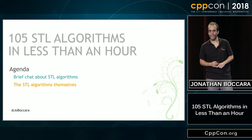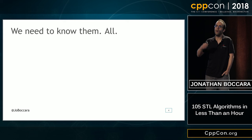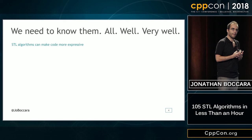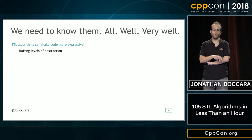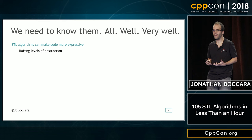There's this thing that's been popularized across the C++ community over the past few years: we need to know all the STL algorithms, and we need to know them well, very well. But why? Well, for one thing, they can make our code more expressive. And they do that by raising levels of abstraction, which means that they allow to express what we want to do, as opposed to how we want it executed. I think that raising the level of abstraction is one of the most efficient ways to write expressive code.